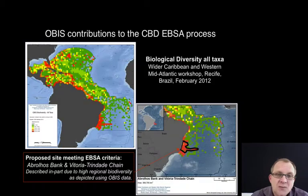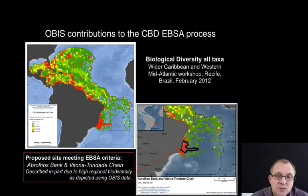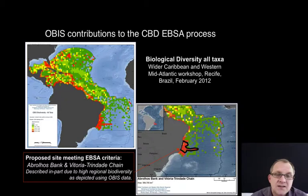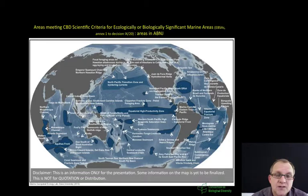To give an example of one of those contributions to the EBSA process, we are providing summary statistics. There was an EBSA workshop in the Caribbean and Southern Atlantic where the area offshore of Brazil appeared to be very high in terms of biodiversity in OBIS and was also selected as a candidate EBSA area. This is the current status of the EBSAs — for OBIS a very important process where the application of data in OBIS has been useful.